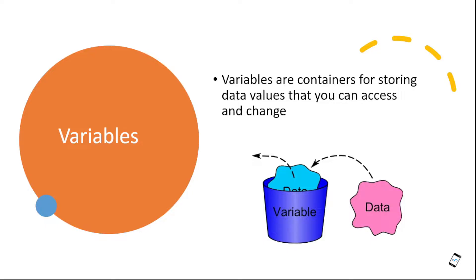Okay guys, first we will talk about variables. Let's see the definition of a variable. It is a container for storing data values that you can access and change. Basically, a variable is an empty container — you can store a value, use the value, or change the value.